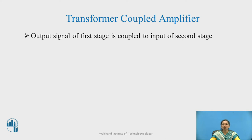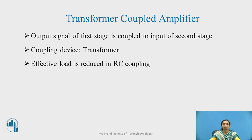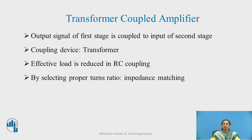The output of the first stage is coupled to the input of the next stage using a transformer as the coupling device. We use the transformer at the collector of the first stage and in further stages, providing the transformer secondary output to the base input of the next stage. In RC coupling, the effective load is reduced because we have a parallel combination of the load with the input impedance of the previous stage, resulting in a reduction in load and inability to obtain proper impedance matching.